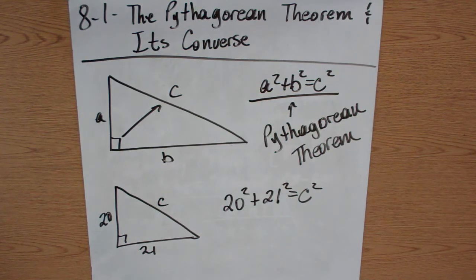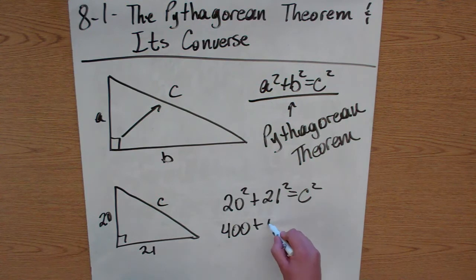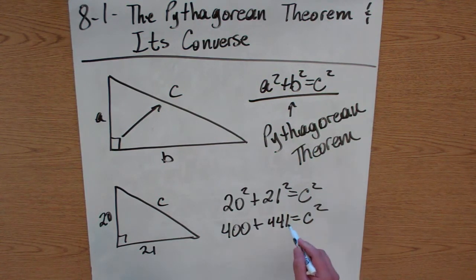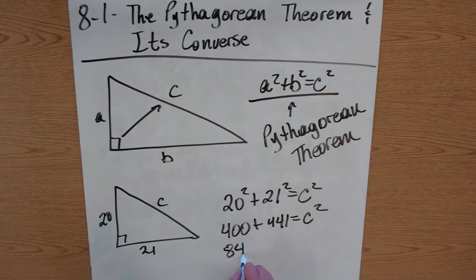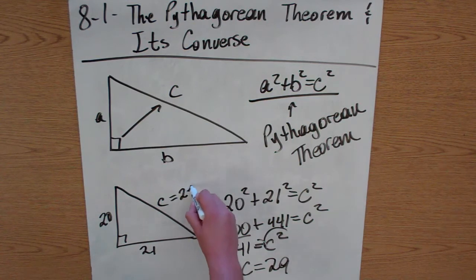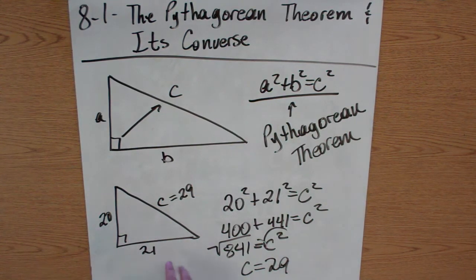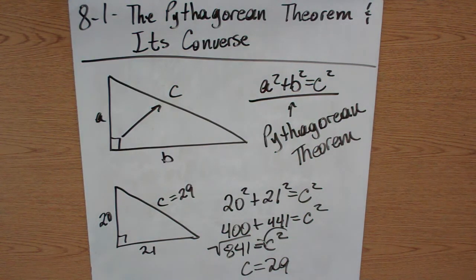20 squared is 400, and 21 squared is 441, and that equals c squared. So that's 841 equals c squared. Then you take the square root of both sides. That's how you use the Pythagorean Theorem: square the two legs, add them together, take the square root of both sides, and that gives you your hypotenuse.